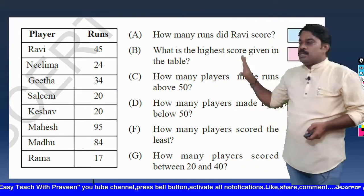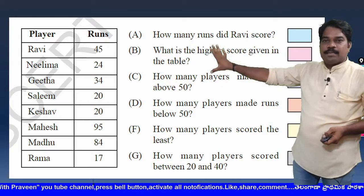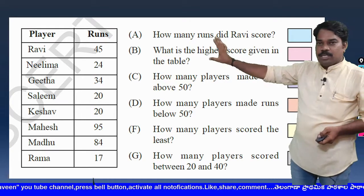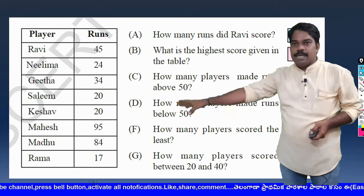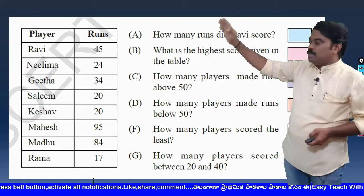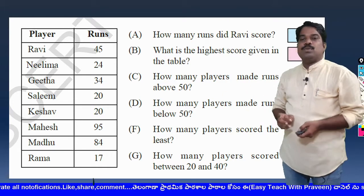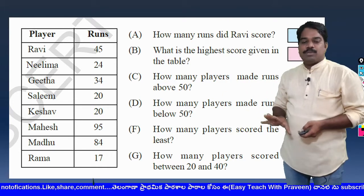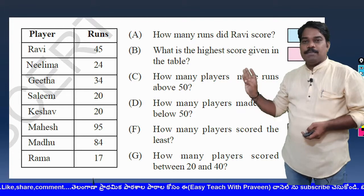Now we have to observe this table and answer the questions. In the table, in one column we are watching the players and in one column we are watching the runs. Here we are supposed to answer some questions — from A to G.